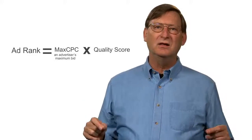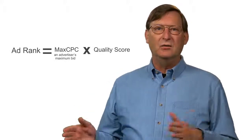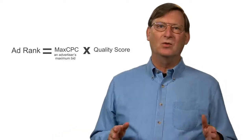To see this more clearly, let's look at how ad rank is calculated. For AdSense sites, ad rank is calculated by multiplying the advertiser's maximum bid by the quality score. So ad rank equals maximum CPC times quality score.